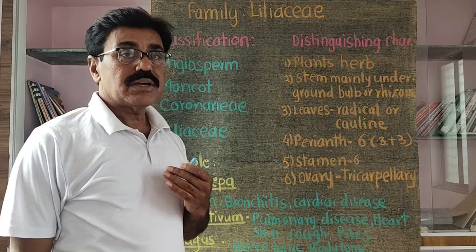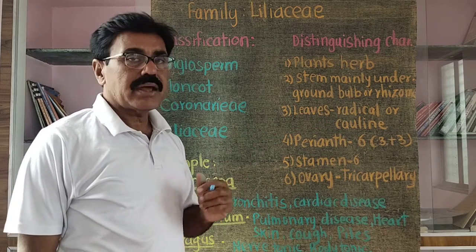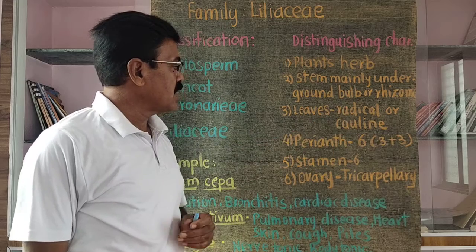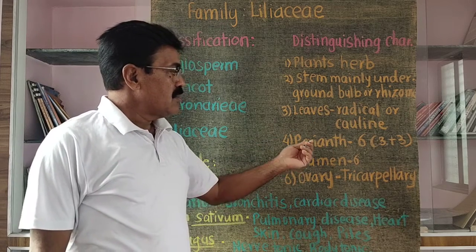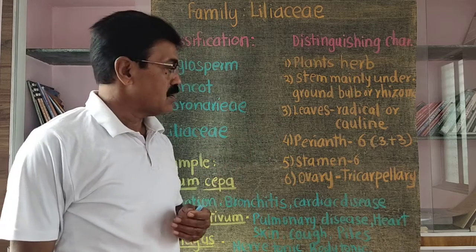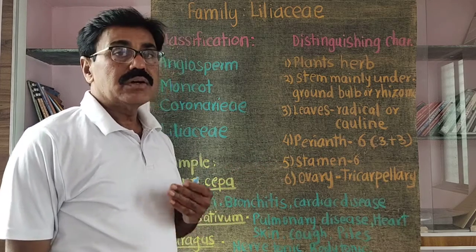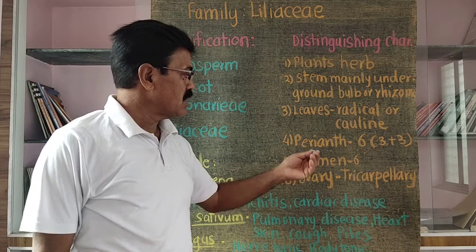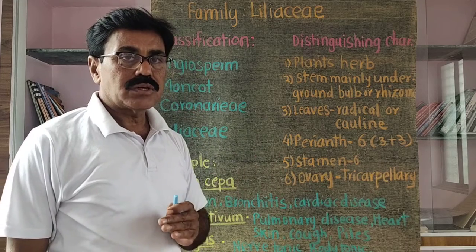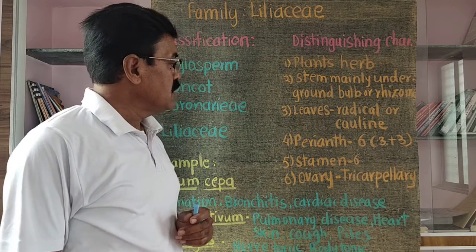The third character: leaves have parallel venation. They are mostly radical, or the base of the leaves is cauline. The leaves are long, linear, and slender with a cauline base, also called radical leaves. Regarding the flower, the inflorescence is racemose type — older flowers at the base and younger flowers towards the apex. The perianth has six lobes arranged in two whorls, that is, three outer and three inner lobes.